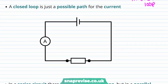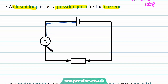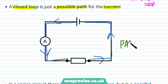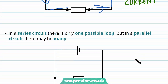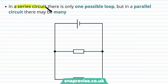A closed loop is just a possible path for the current. In this circuit, the path of the current forms a closed loop. In a series circuit there is only one possible loop.